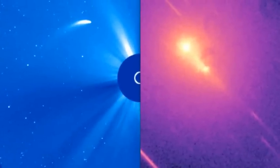And right now, we have another one, this 96p Mach-Holtz. It is at perihelion. That means that it is at its closest approach to the sun.